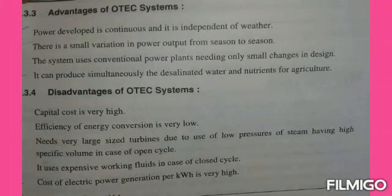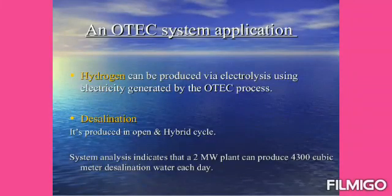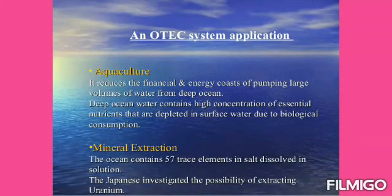The disadvantages of ocean thermal energy are: capital cost is very high, efficiency of energy conversion is very low, and it needs very large size turbines due to the use of low pressure steam. Large turbines are required, and the working fluid used in the closed cycle — Freon — is expensive. The cost of electric power generated per kilowatt hour is also very high.